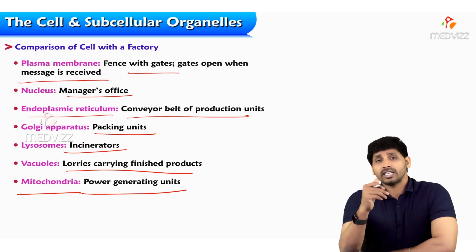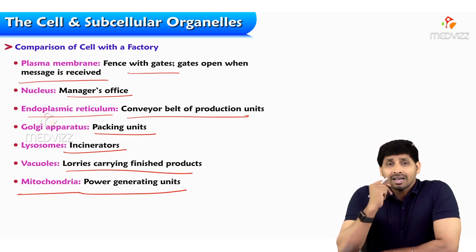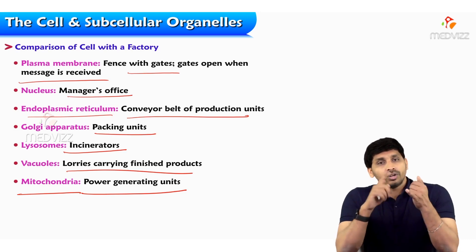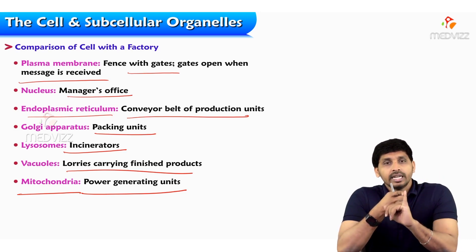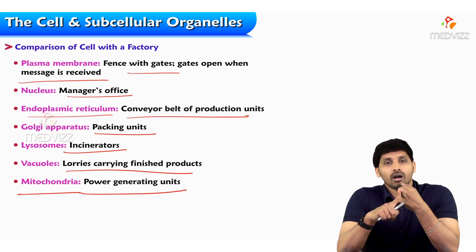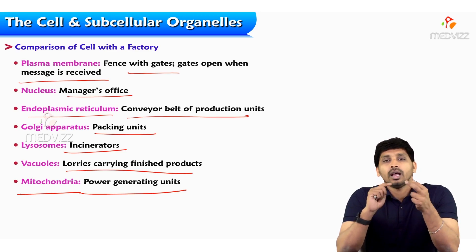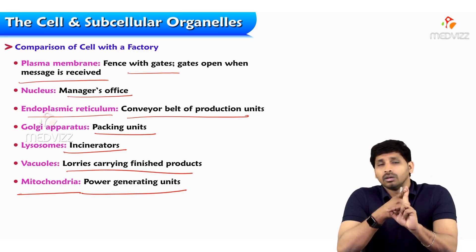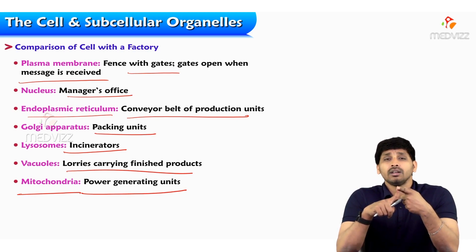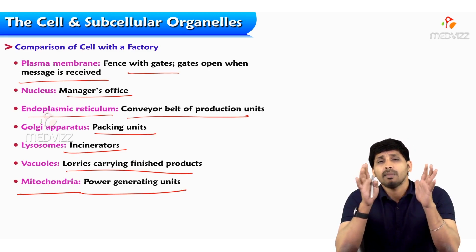From an exam point of view, you can be asked about marker enzymes. What are marker enzymes? For the nucleus, enzymes involved in DNA replication act as markers. For the endoplasmic reticulum, enzymes involved in protein synthesis, glycoprotein synthesis, and lipoprotein synthesis are markers. For lysosomes, acid phosphatase is a marker. For mitochondria, enzymes of the Krebs cycle and electron transport chain are markers. For cytosol, the enzymes of HMP shunt and glycolysis act as marker enzymes.